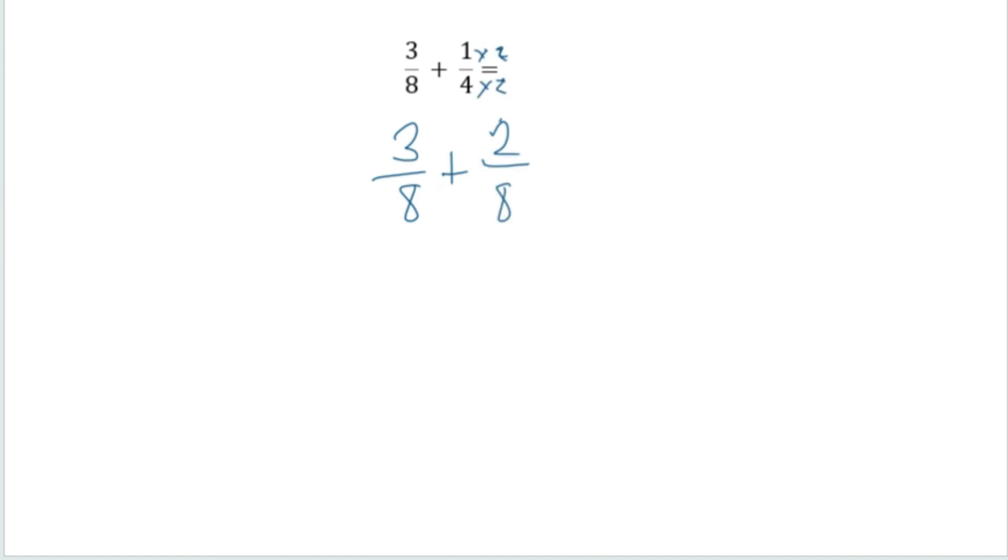So now that I have a common denominator of 8, I can set this equal to 5 eighths. My numerator I add across, and I keep my common denominator. So that's how we would solve that problem.